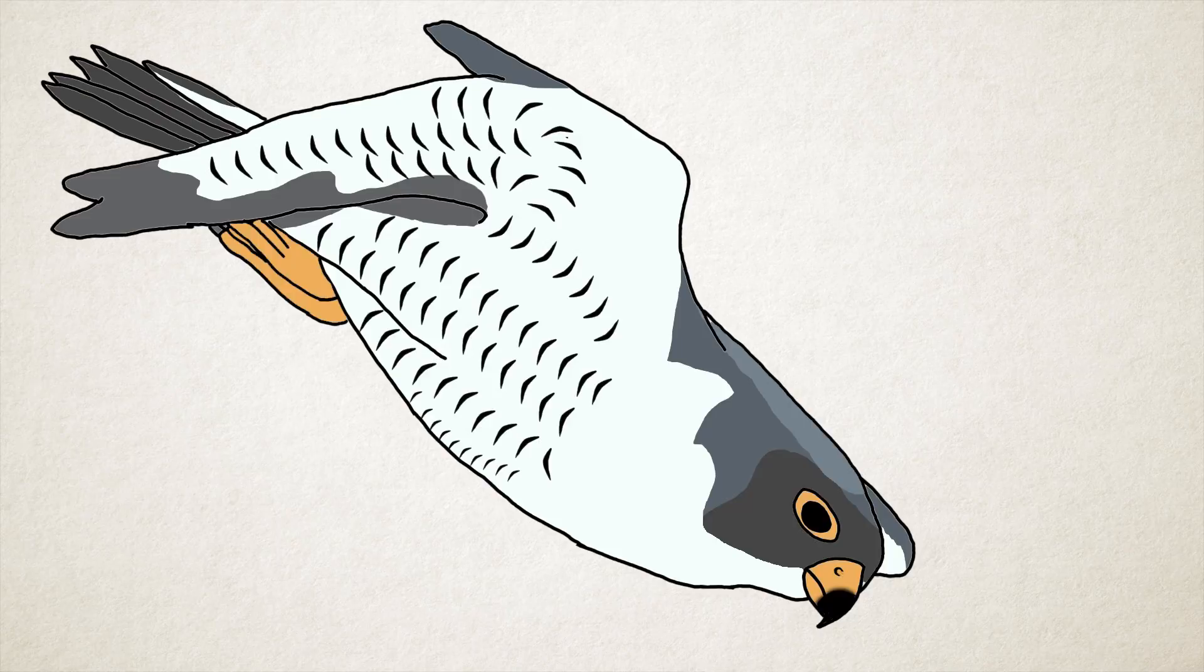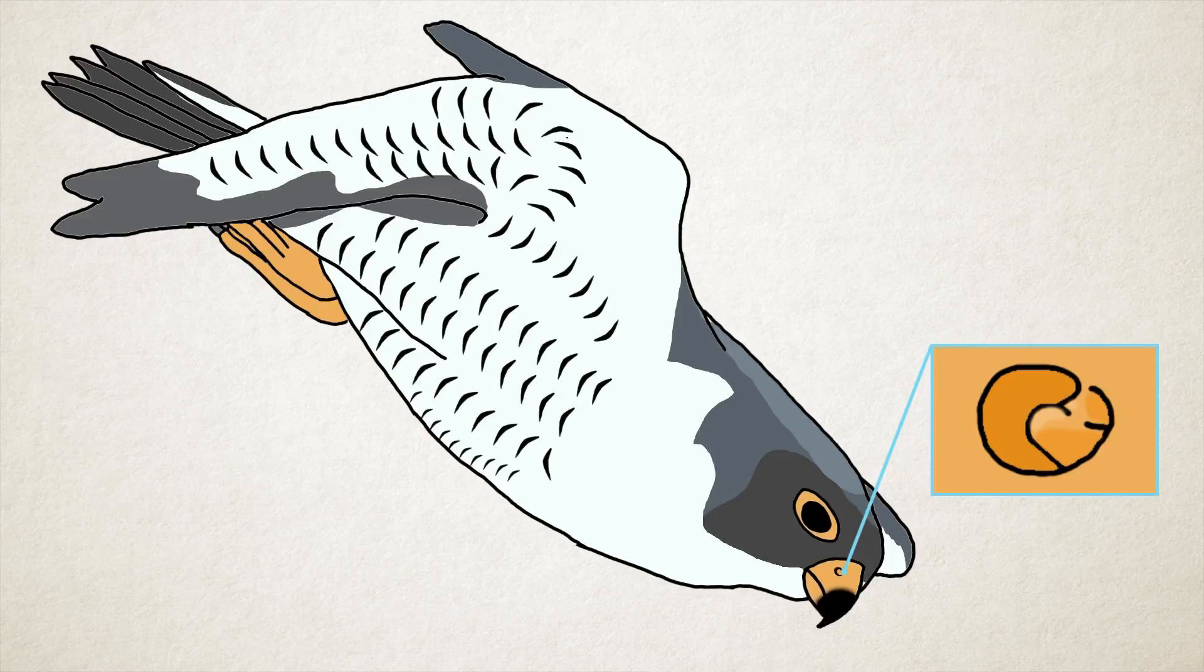For reaching this speed, they fly at a high altitude and when the falcon spots the prey, it flies down with its wings nearly closed for aerodynamics. The air pressure from such a fast dive could damage its lungs, but the small bony tubercles on its nostrils guide the airflow away.